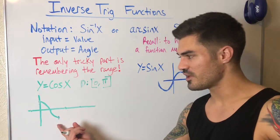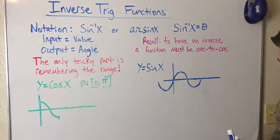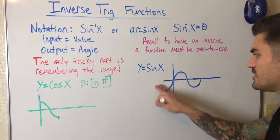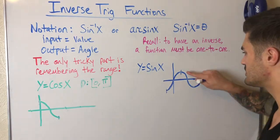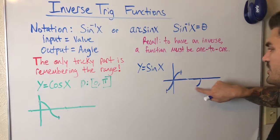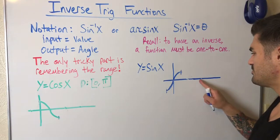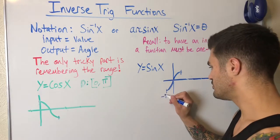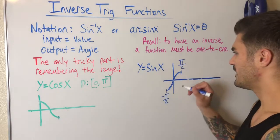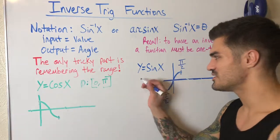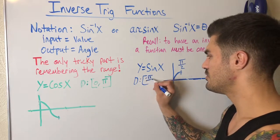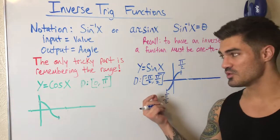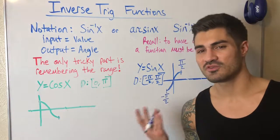If you understand where these come from, if you ever forget them you can draw a little sketch. For sine, I can cut off at negative π/2 and positive π/2 — if I erase everything around it, the sine function is now one-to-one. As math people, we've agreed on this interval because it makes the most sense — it's close to zero. So the domain restricted to negative π/2 to π/2 means the range of sine inverse is negative π/2 to π/2.